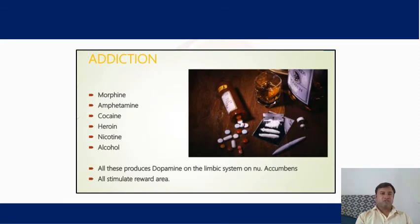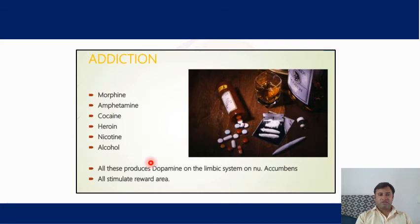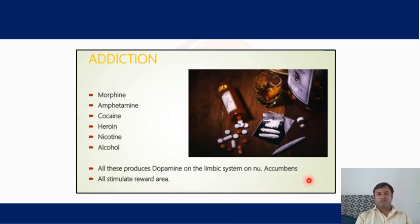Some chemicals responsible for addiction include morphine, amphetamine, cocaine, heroin, nicotine, and alcohol. All these substances produce dopamine in the limbic system. Dopamine is a neurotransmitter responsible for the pleasure response, and it is also secreted by the reward area.